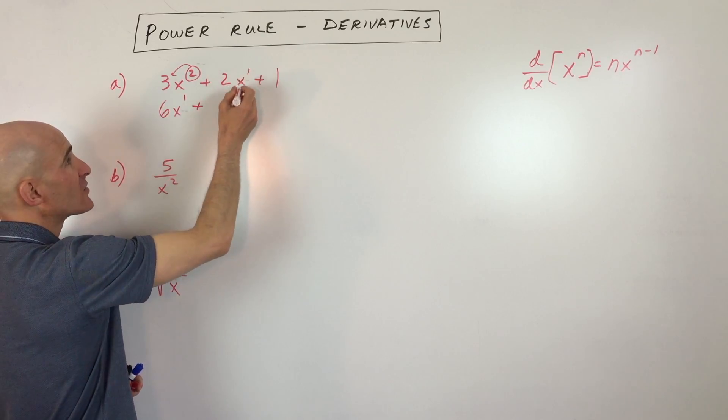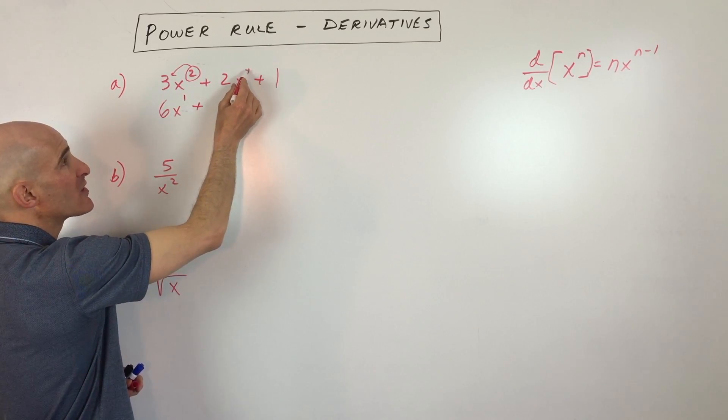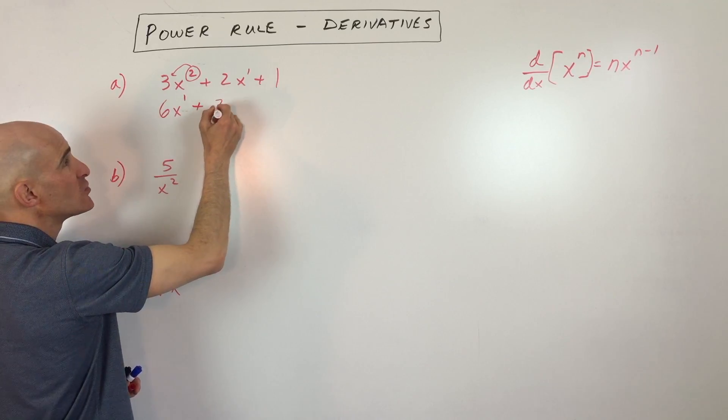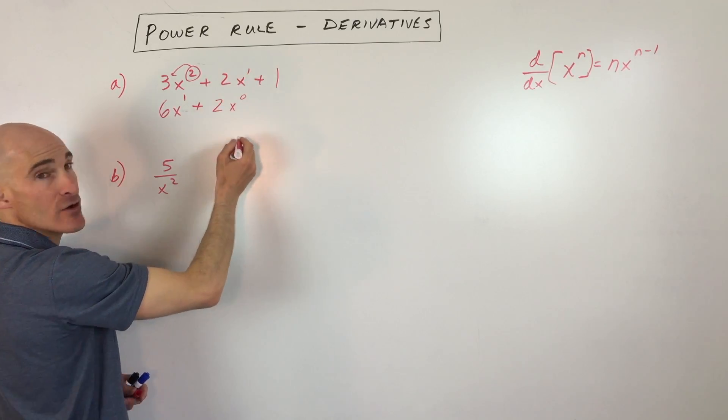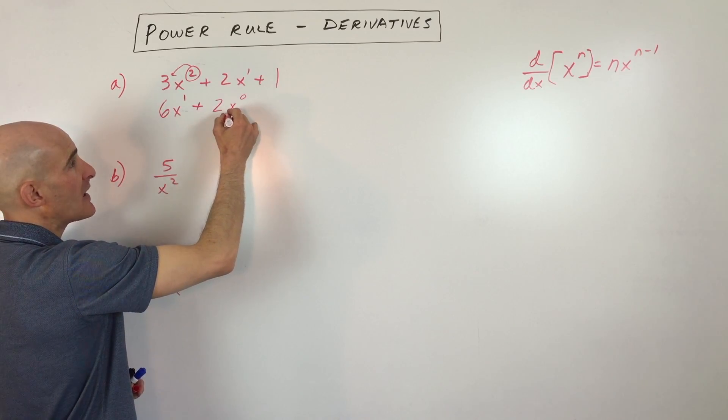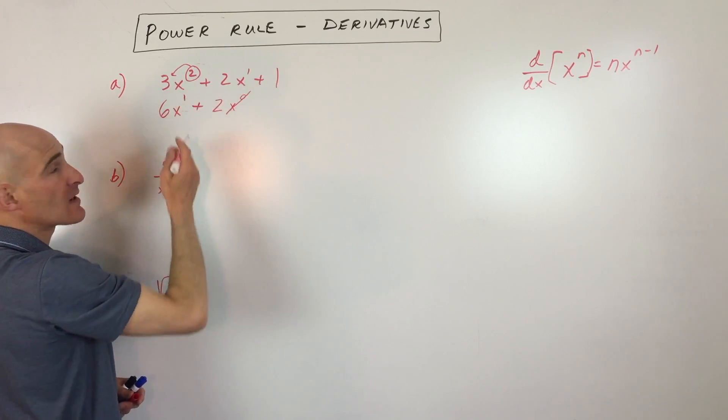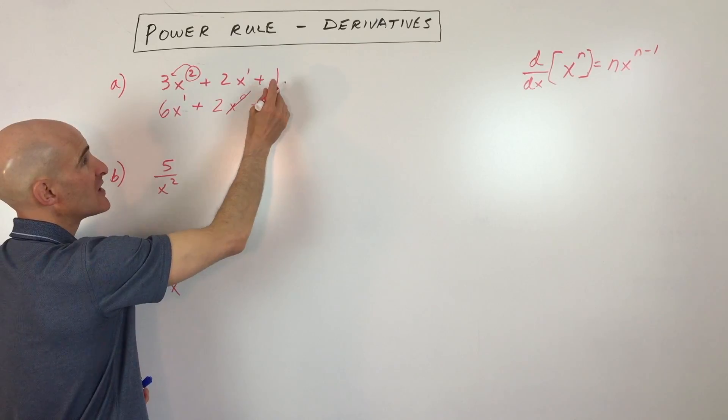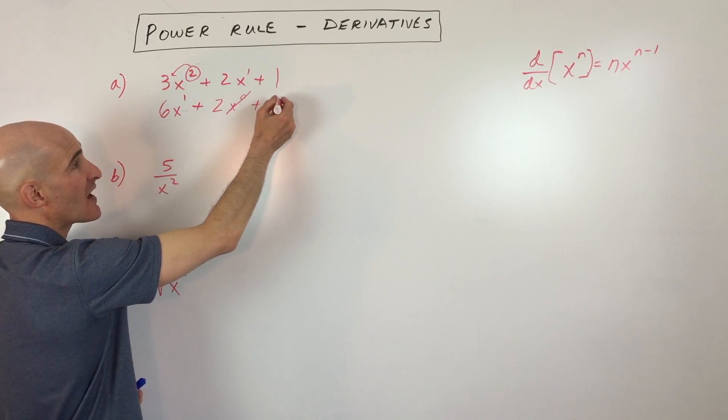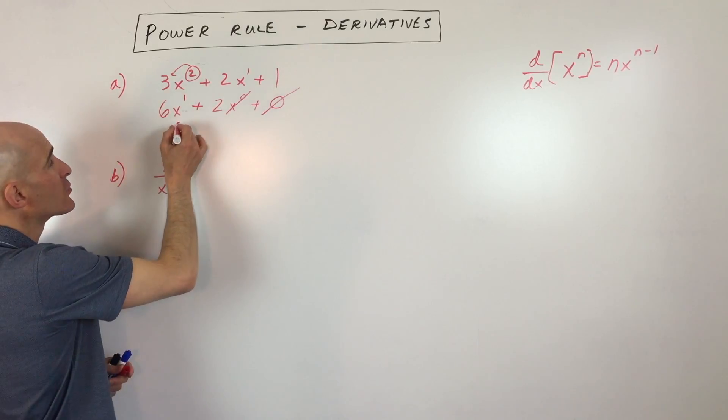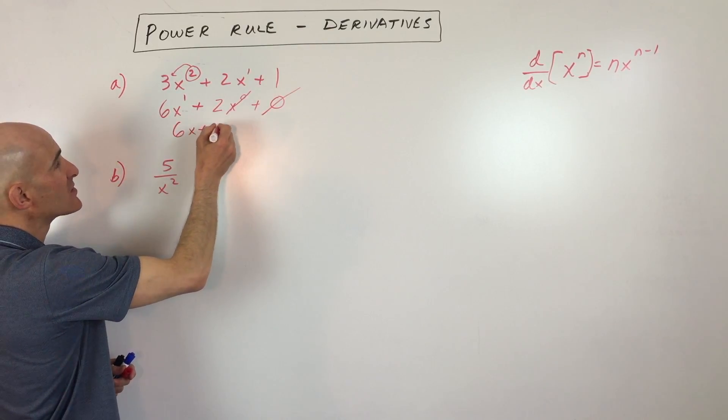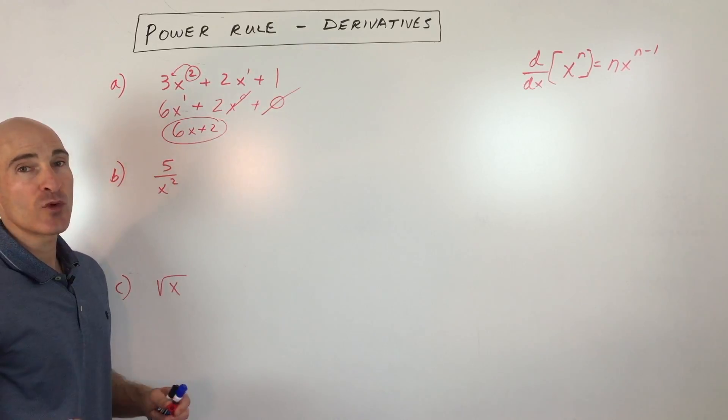When we take the derivative of 2x, you don't see it, but there's a 1 there. When we bring the 1 down in front, 1 times 2 is 2, this is going to be x to the 1 minus 1, which is 0, but anything to the 0 power is just going to be 1. 1 times 2 is 2, and then if we take the derivative of a constant, the derivative of a constant is always going to be 0. We don't have to write that. So our derivative is just going to be 6x plus 2.